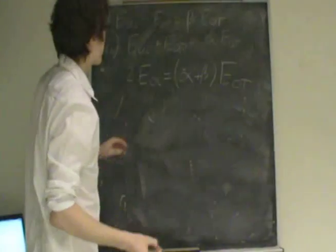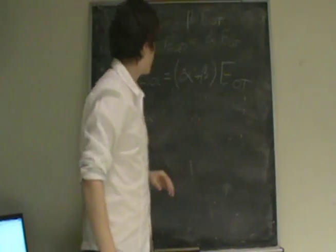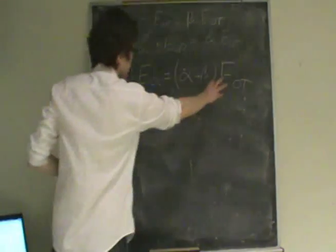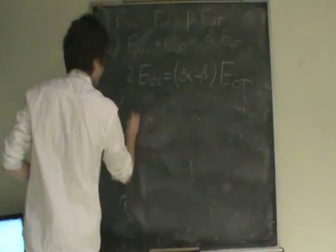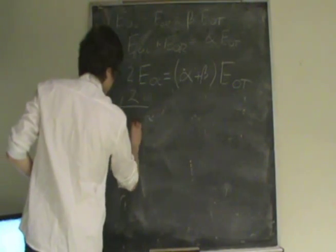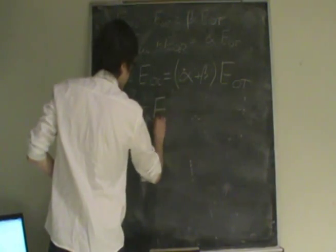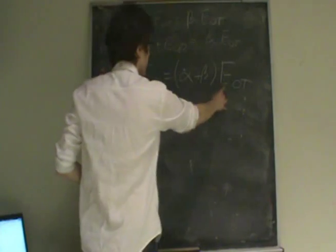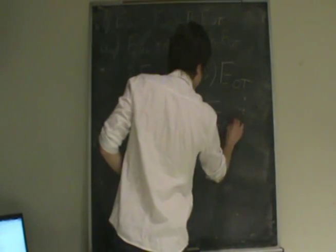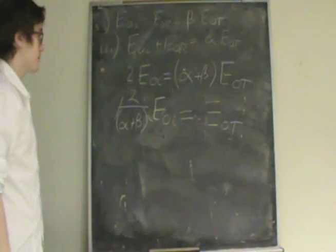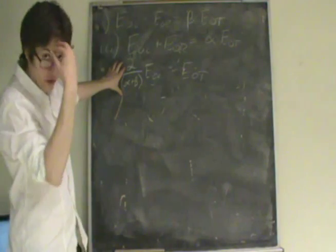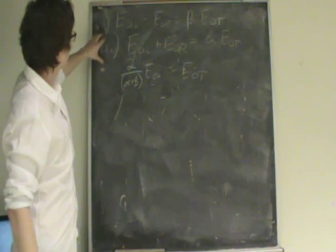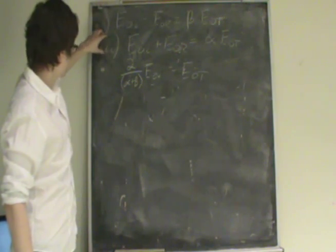What we want is to express the reflective and transmitted terms depending on the incident part. We divide both sides by that term to get 2 over alpha plus beta times the incoming electric wave, which equals the transmitted part of the electric wave. This is the third Fresnel equation. To get the last one, we subtract the two equations — equation 1 from equation 3.